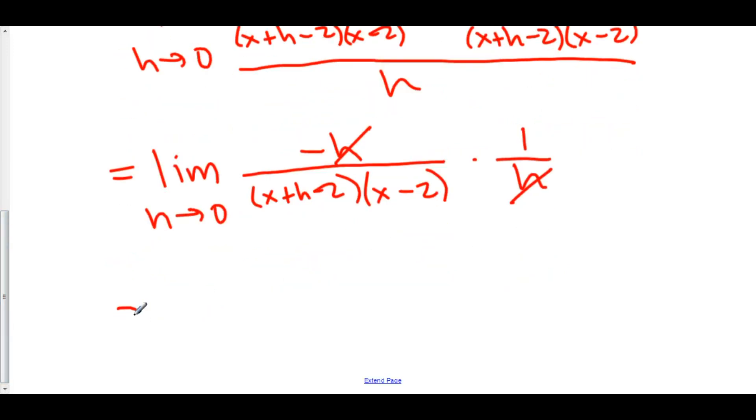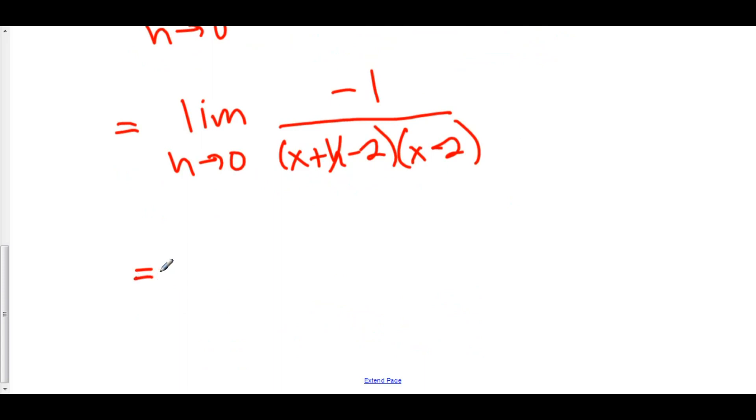So here we have the limit as h approaches 0 of negative 1 over x plus h minus 2 times x minus 2. And if you plug 0 into h here, this h goes away. And now this is equal to negative 1 over x minus 2 times x minus 2, which can be simplified as negative 1 over x minus 2 squared. And that is f prime of x, the derivative of f.